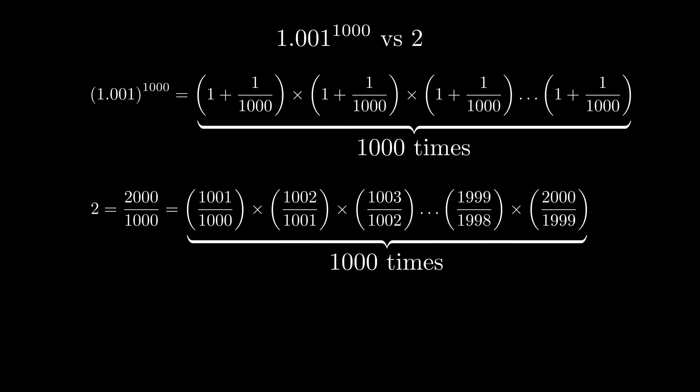Why bother doing this at all? Well, we can rewrite this 1,000-term product in a very similar way to our previous equation. 1,001 over 1,000 is the same as 1 plus 1 over 1,000.